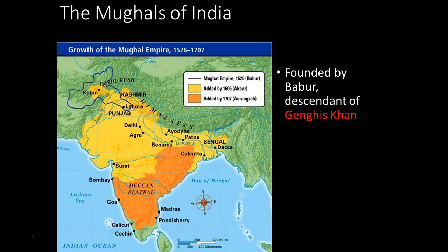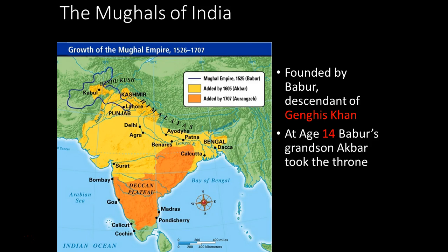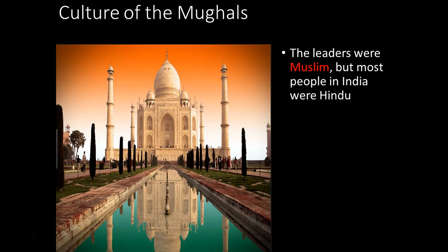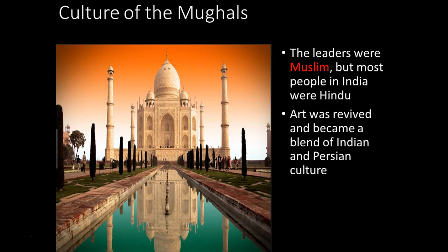The Mughals are founded by Babur, a descendant of Genghis Khan. At age 14, Babur's grandson Akbar took the throne and is the most important Mughal leader. They create a language mixing Persian and Arabic — cultural diffusion — and build the Taj Mahal. Most Mughal leaders are Muslim, so you have a Muslim minority ruling a Hindu majority. Initially they respect Indian and Persian art, blending cultures much like Alexander's Hellenistic empire.